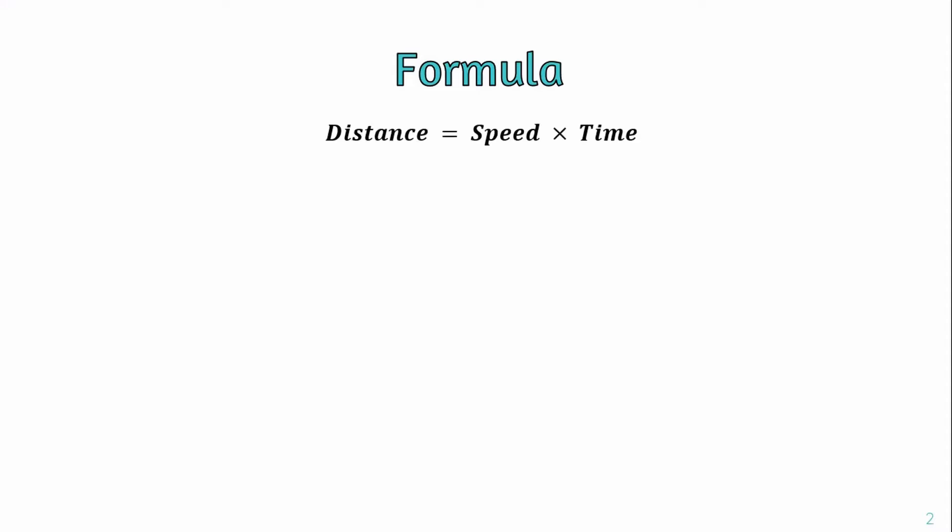In this relationship, the distance will be speed multiplied by time. We will use the formula: distance is equal to speed into time, also written as D equal to Vt, where D is distance, V is velocity, and T is time. We will use this formula for speed, distance and time related problems.